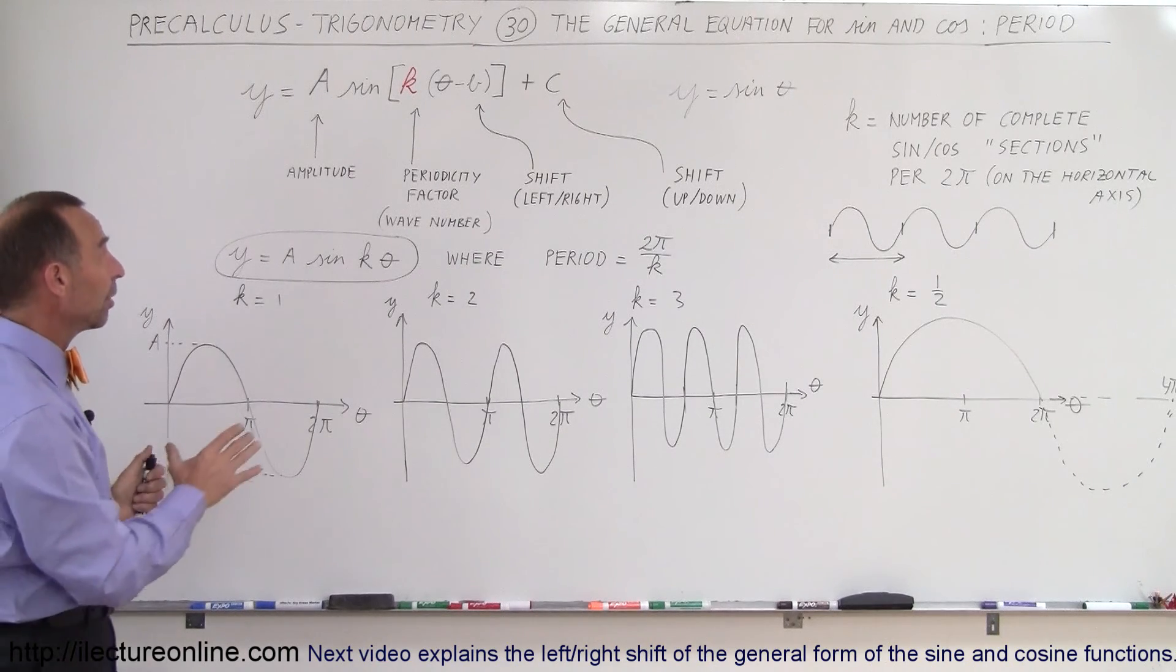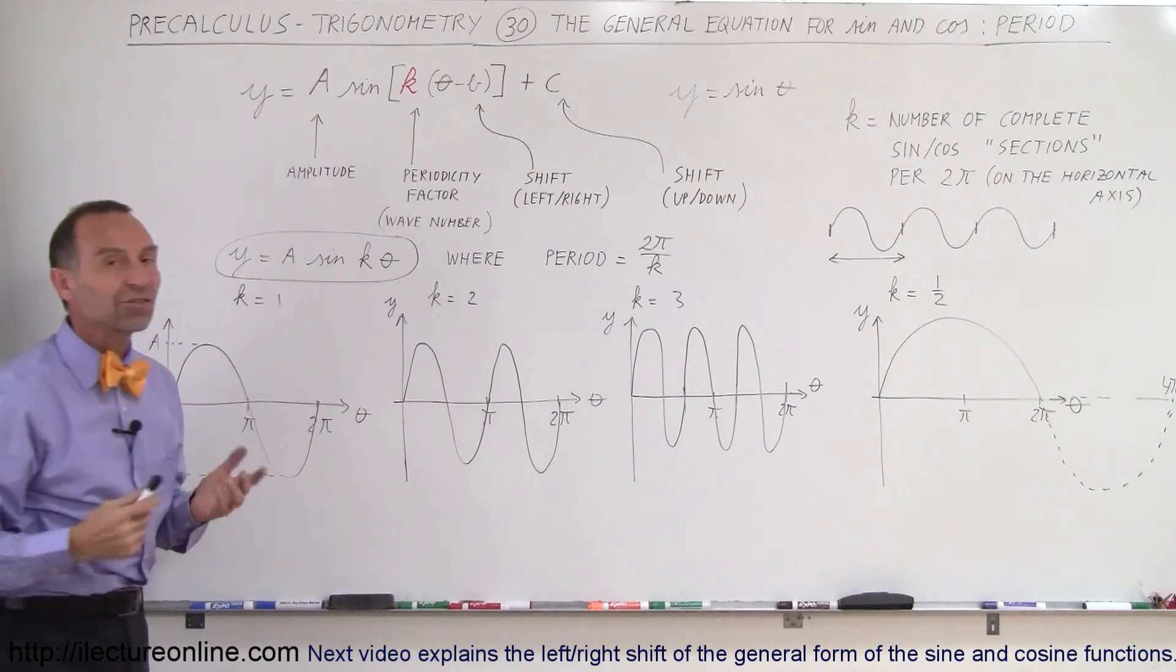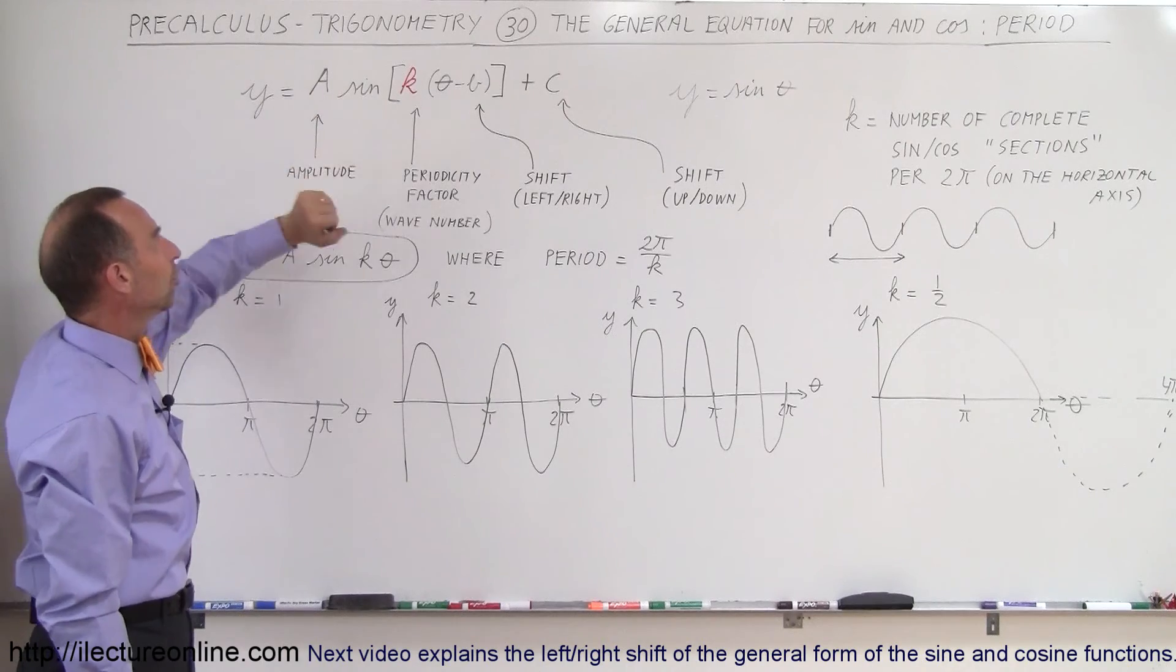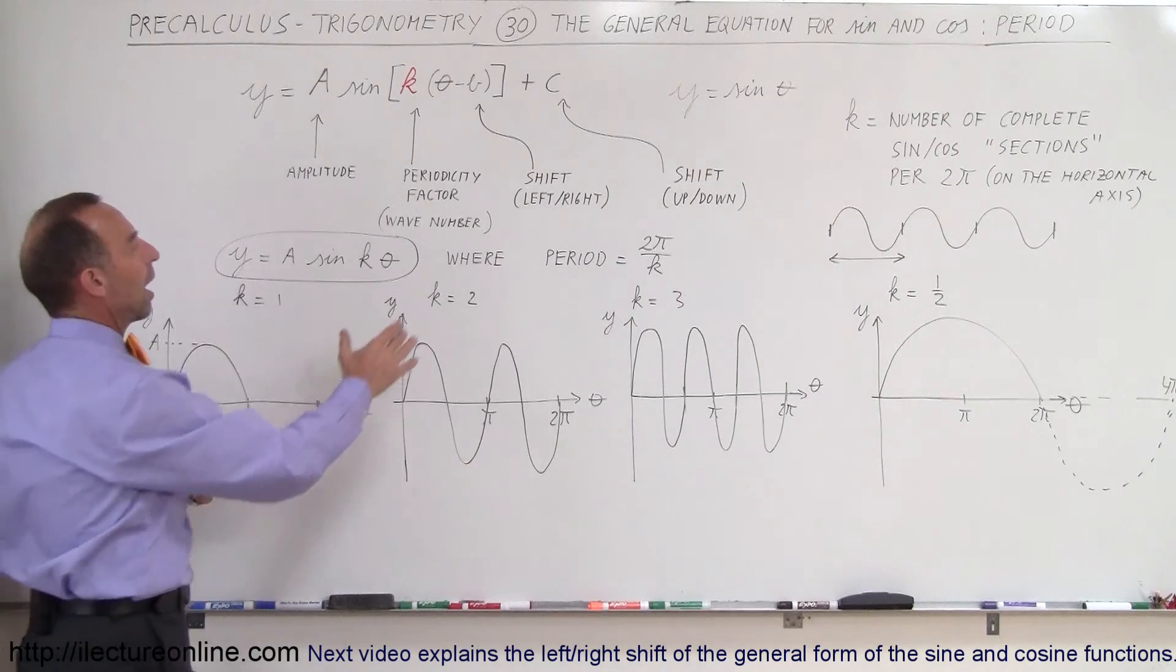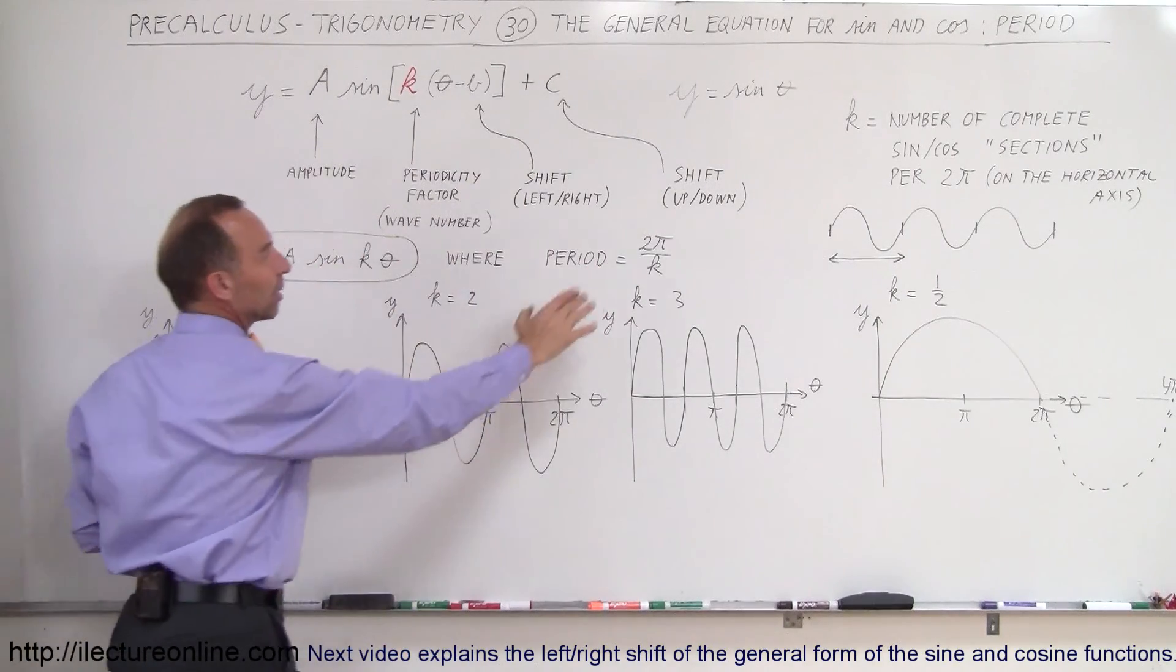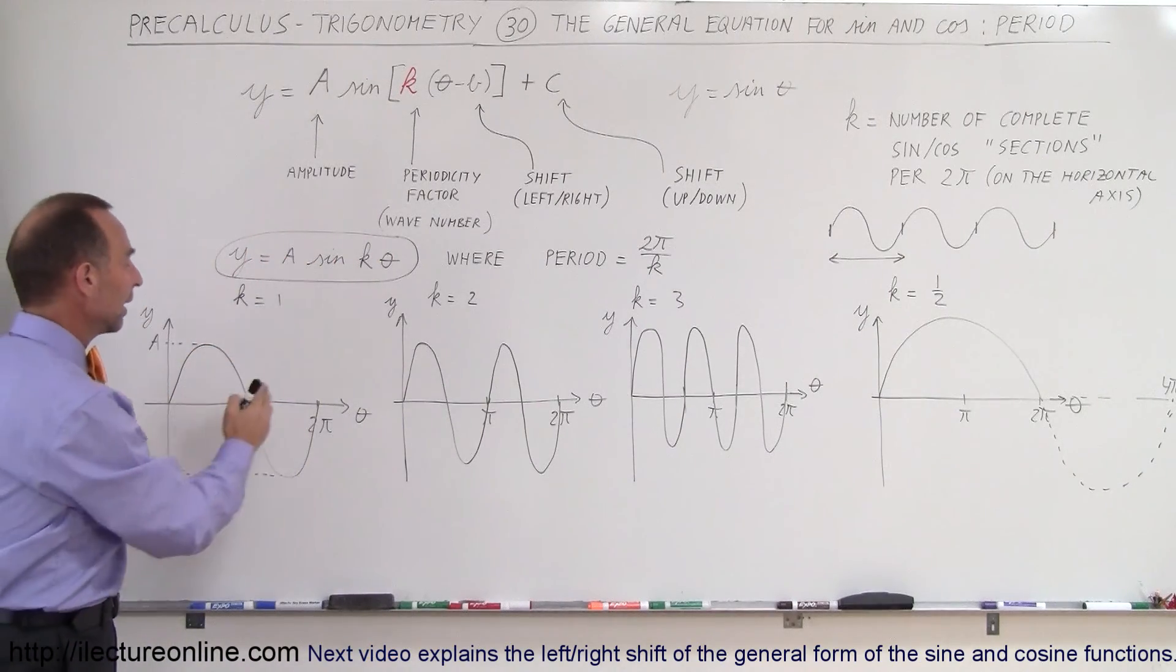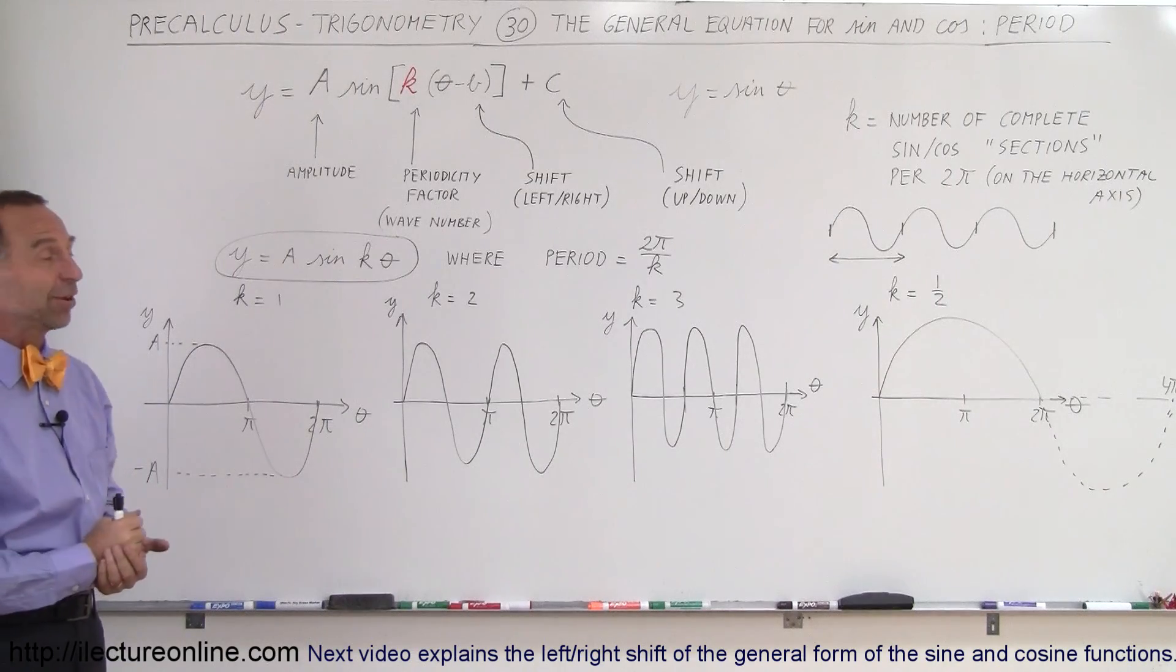So that's the second part of defining the general equation for a sine or cosine function. In the last video we saw what the amplitude did. Here we see what the periodicity factor does, or in other words, how we determine the period of a particular sine or cosine function by simply taking 2π divided by k. That's the number of periods that you have on a 2π section of the graph. There you go. That's how we do that.